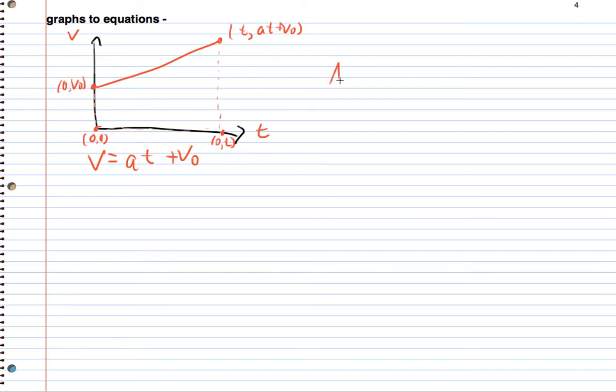So the area of a trapezoid is given as h1 plus h2 all over 2 times the base. So here, h1 equals v naught.